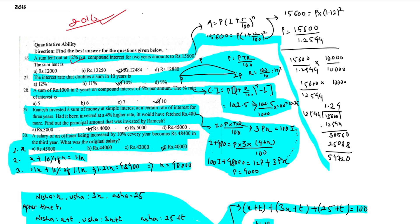A sum lent at 12% per annum compound interest for 2 years amounts to 15,600. This is the first price — the principal amount — and the compound interest rate is 12% per annum.